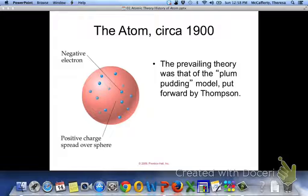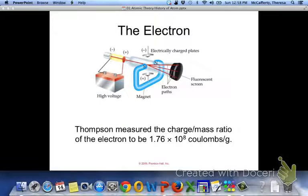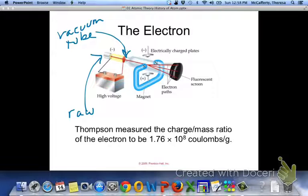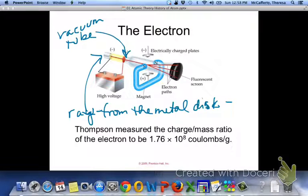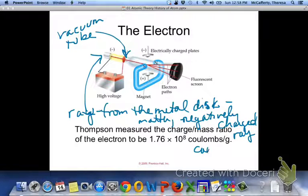And he came up with the idea of this plum pudding model from this experiment. This was a vacuum tube, and I know I'm jumping around a little bit. There was nothing in this tube where this ray could have come from, so the ray had to have come from this metal disc. That metal disc is matter, so this negatively charged ray had to have come from matter, and it came from neutral matter.